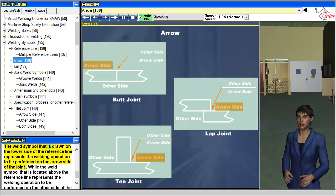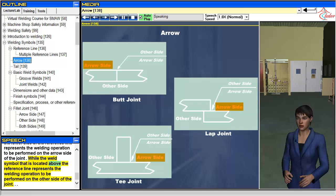The weld symbol that is drawn on the lower side of the reference line represents the welding operation to be performed on the arrow side of the joint. While the weld symbol that is located above the reference line represents the welding operation to be performed on the other side of the joint.